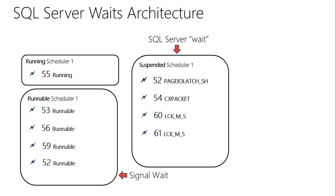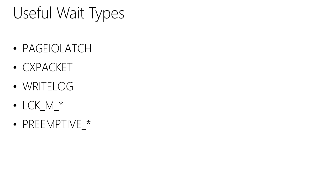The third state is the runnable state. We're running in this cycle: I'm running, I voluntarily yield while I wait for something from disk, then I get that information back and need to get back onto the CPU, so I join the runnable queue. Time spent in the suspended state is a SQL Server wait; anything that is runnable is what we call a signal wait — a way to track CPU pressure, because anything runnable is just waiting to get onto the CPU.